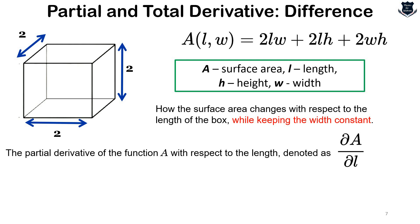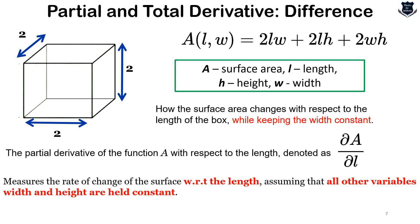The partial derivative measures the rate of change of the surface area with respect to the length, assuming that all other variables — width and height — are held constant. It tells us how much the surface area changes when we change the length alone, without affecting the other dimensions. So del A by del l means I am differentiating with respect to l while h and w are kept constant.